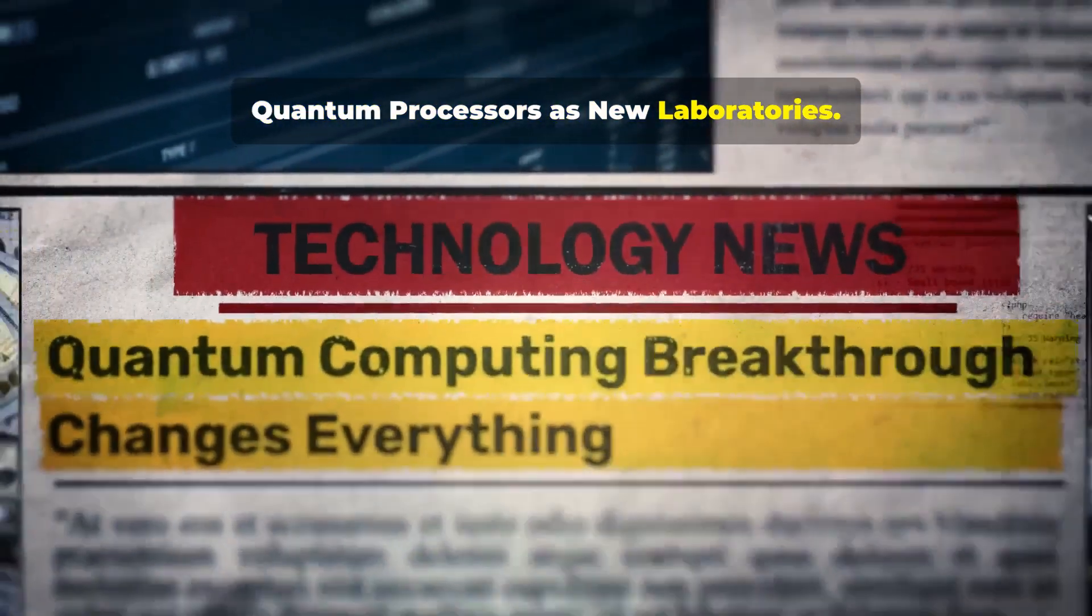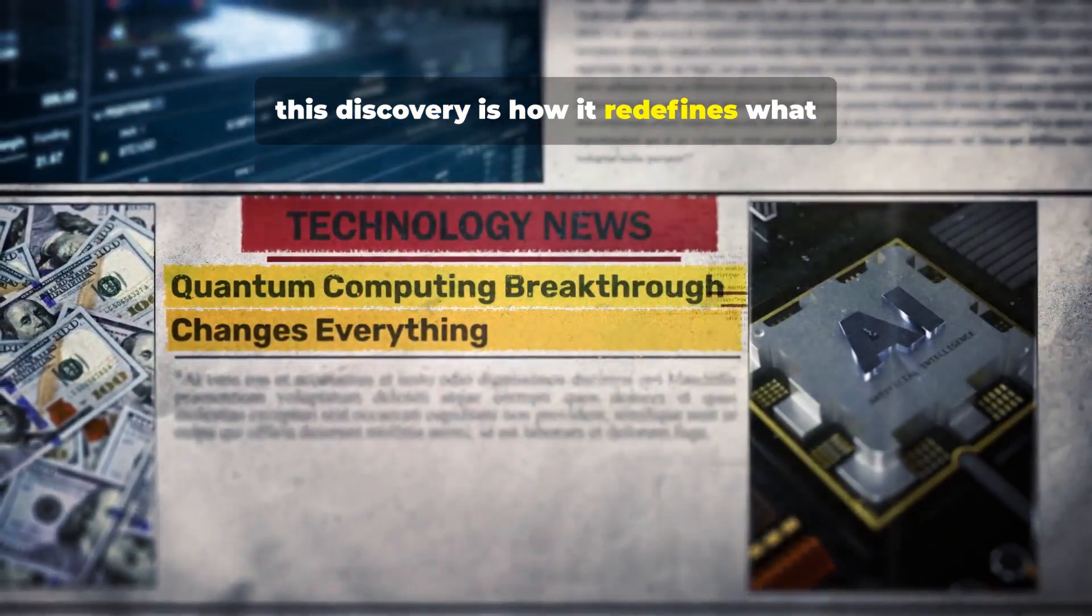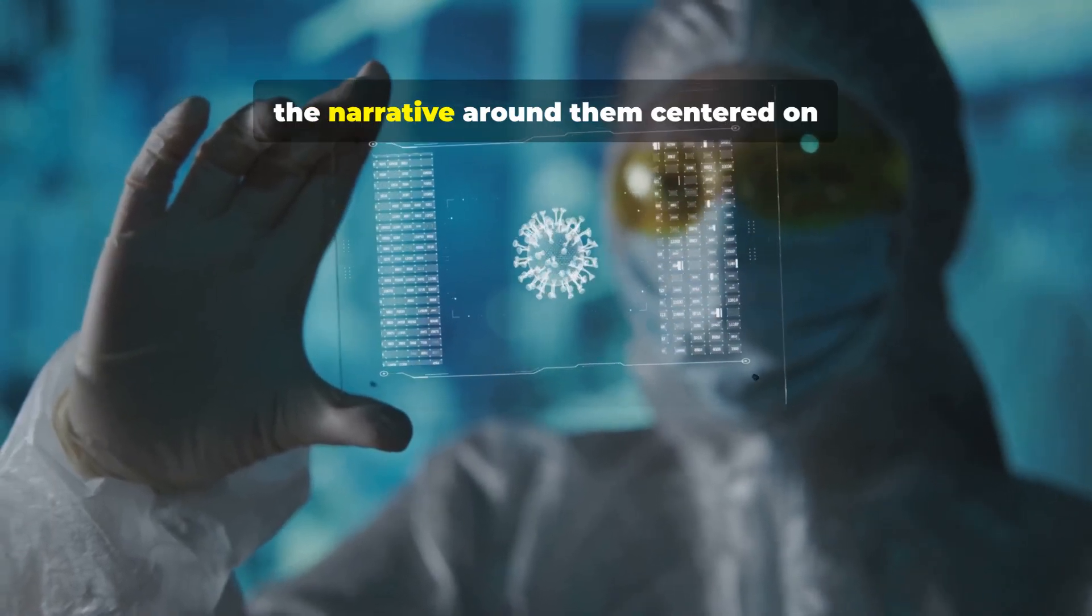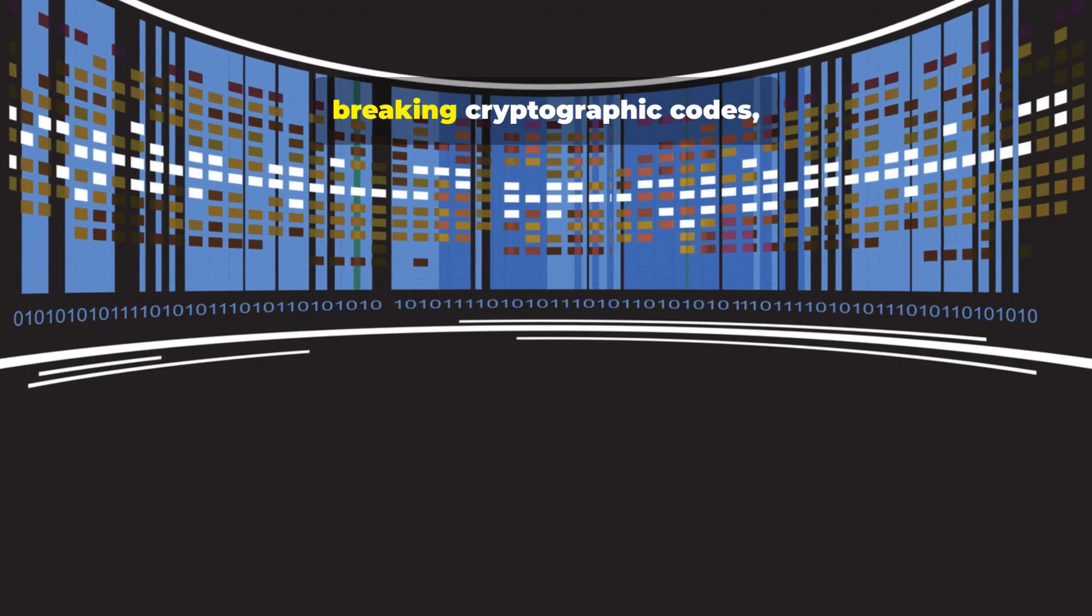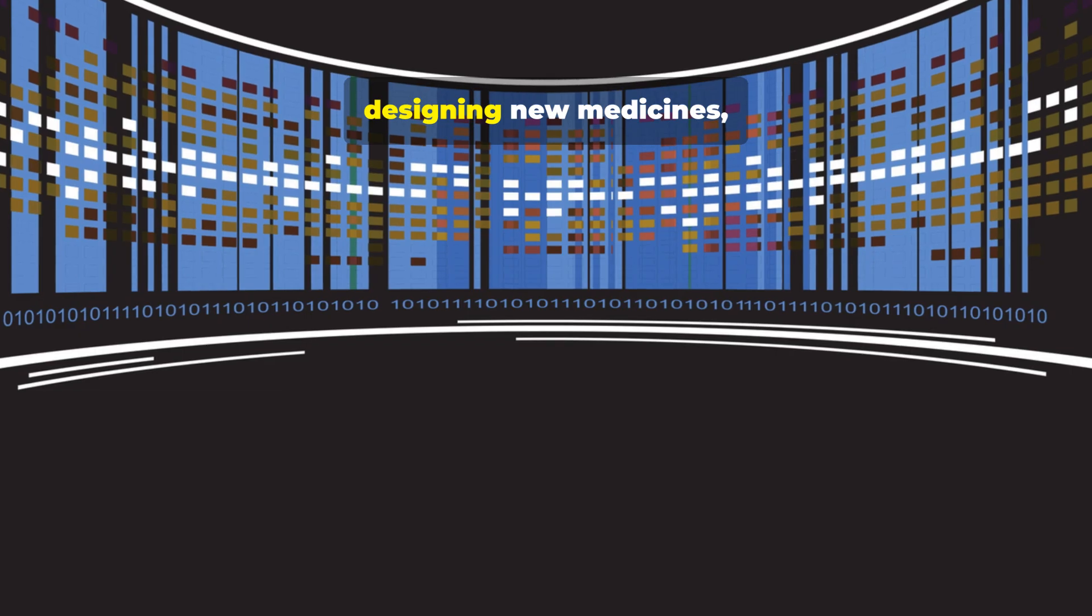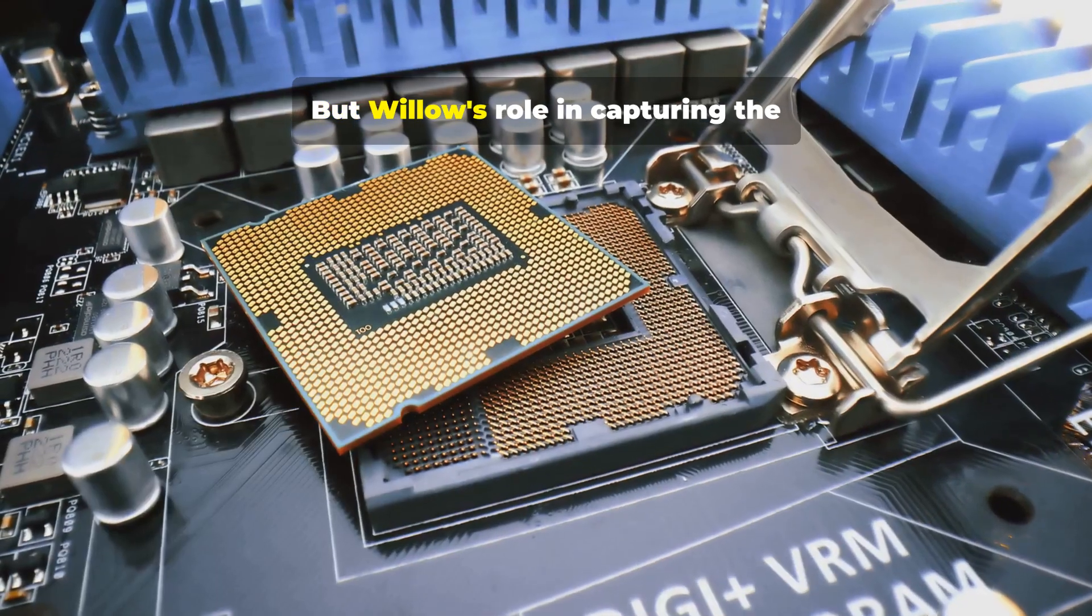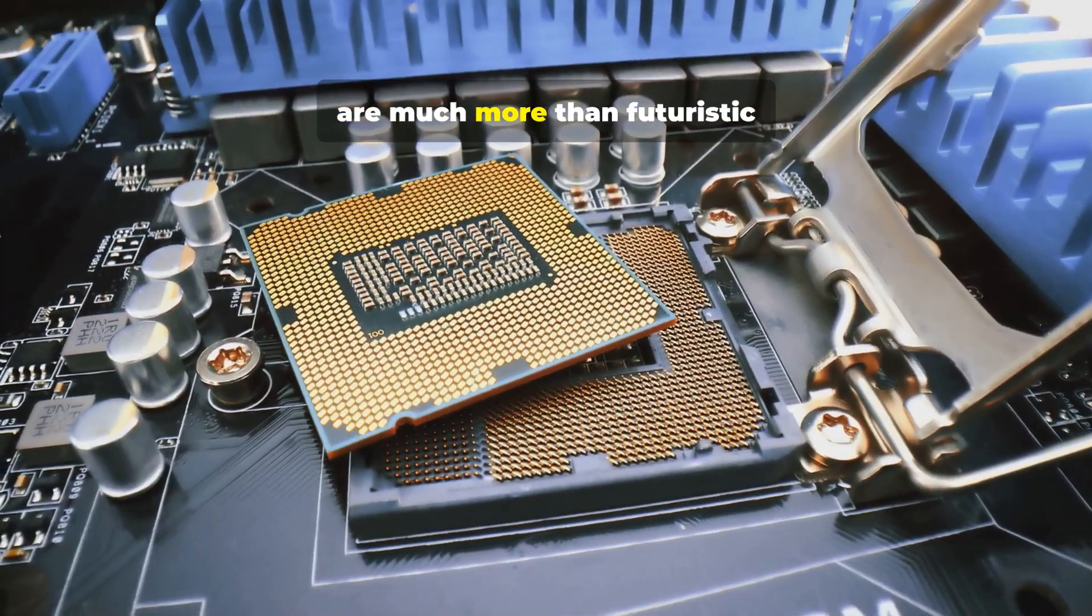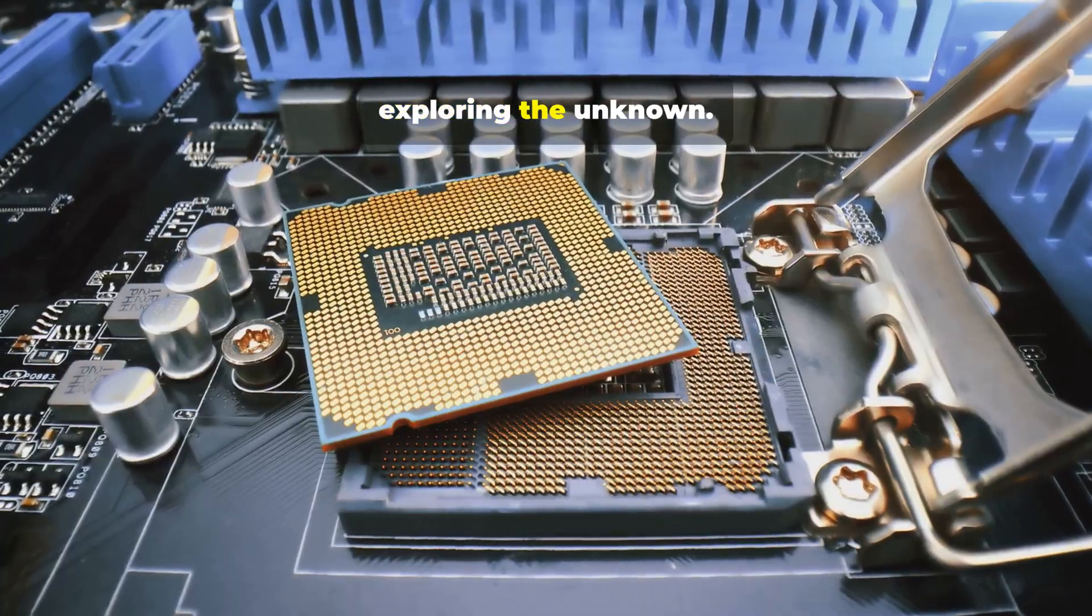One of the most important outcomes of this discovery is how it redefines what quantum computers are for. For years, the narrative around them centered on solving extremely complex problems, breaking cryptographic codes, designing new medicines, or optimizing networks and logistics. But Willow's role in capturing the Floquet state shows that these machines are much more than futuristic calculators. They are platforms for exploring the unknown.